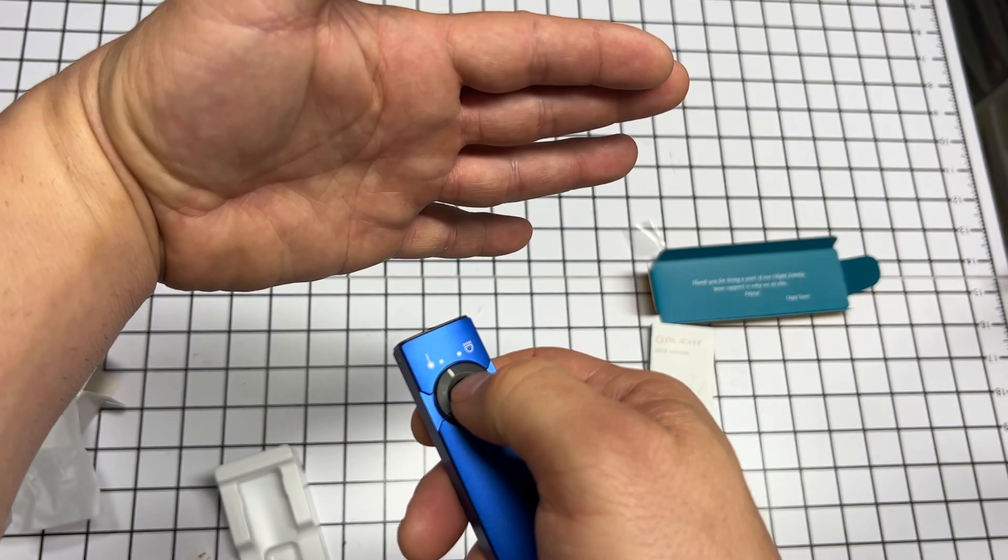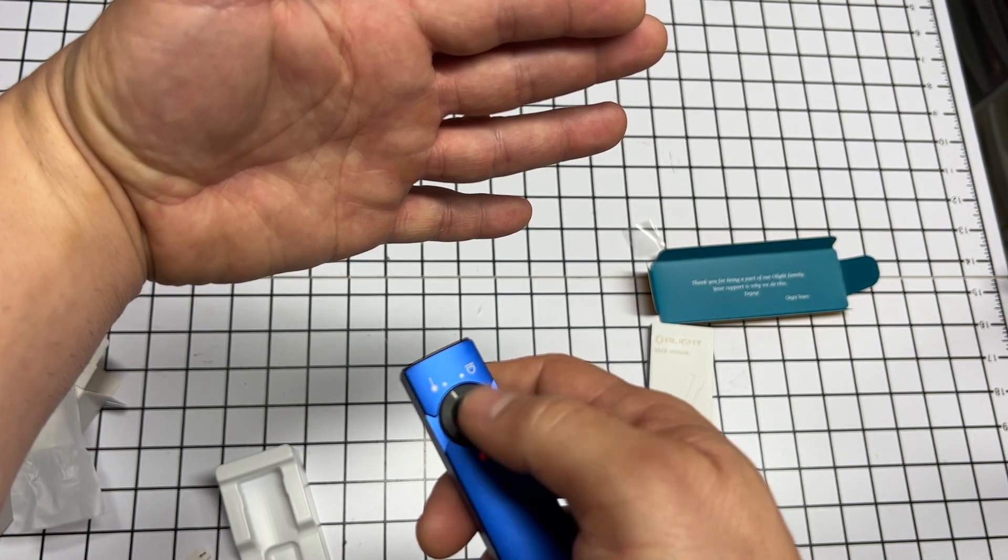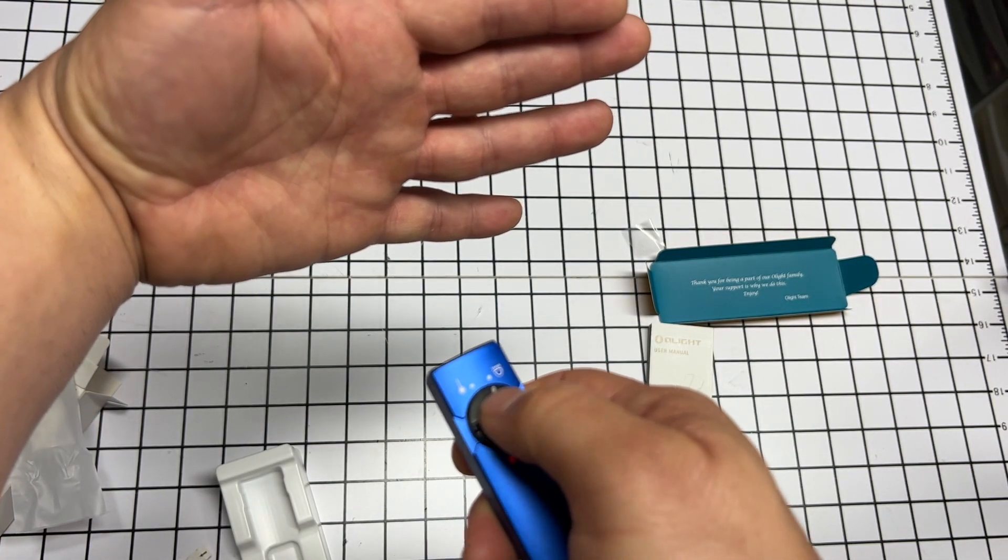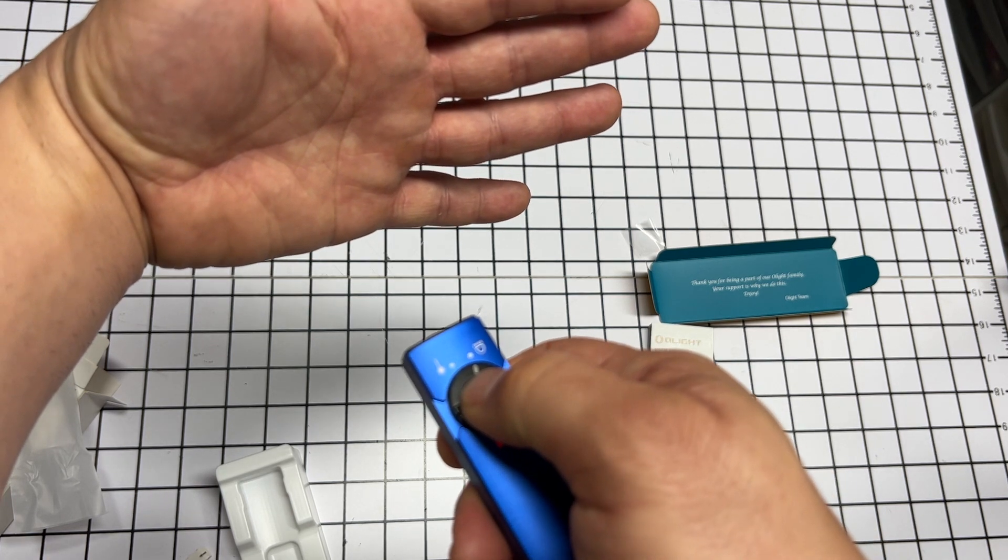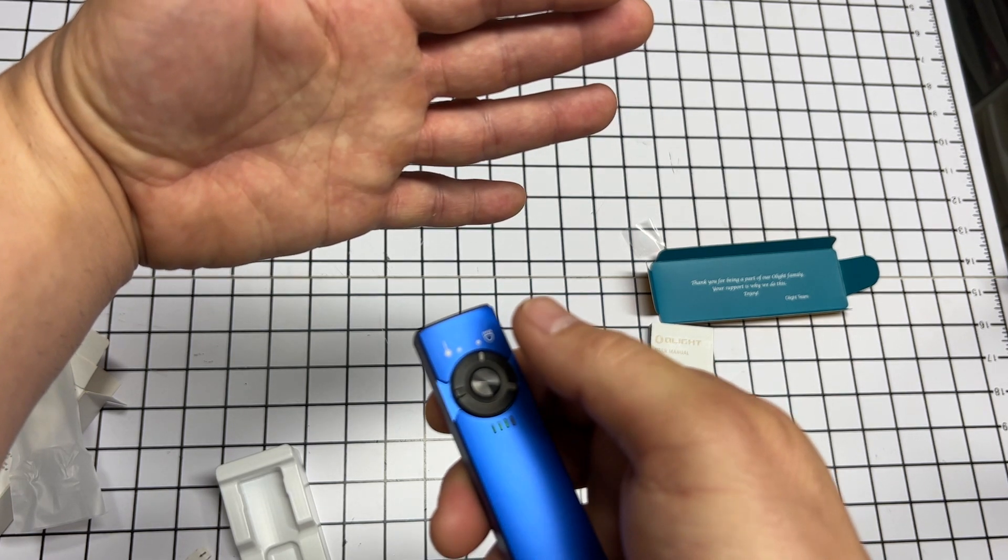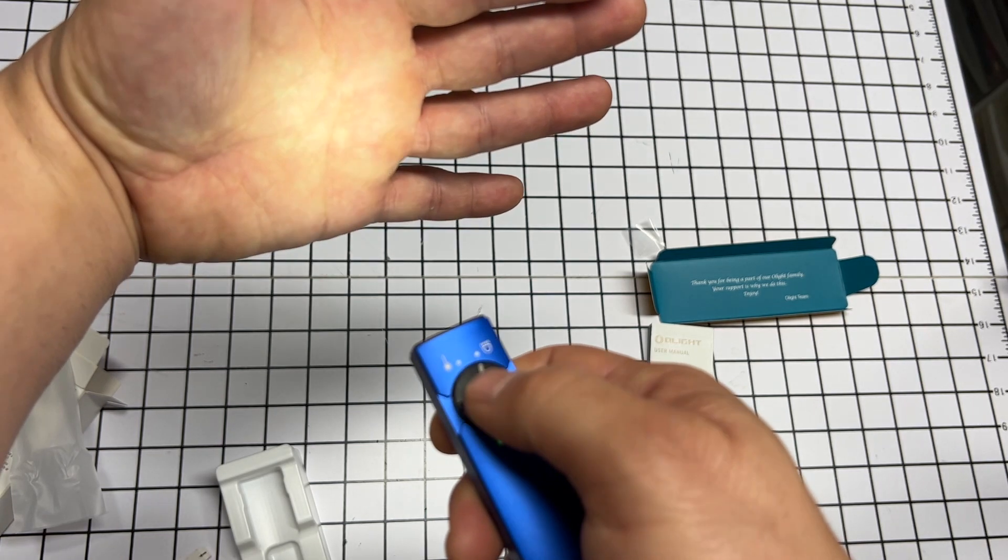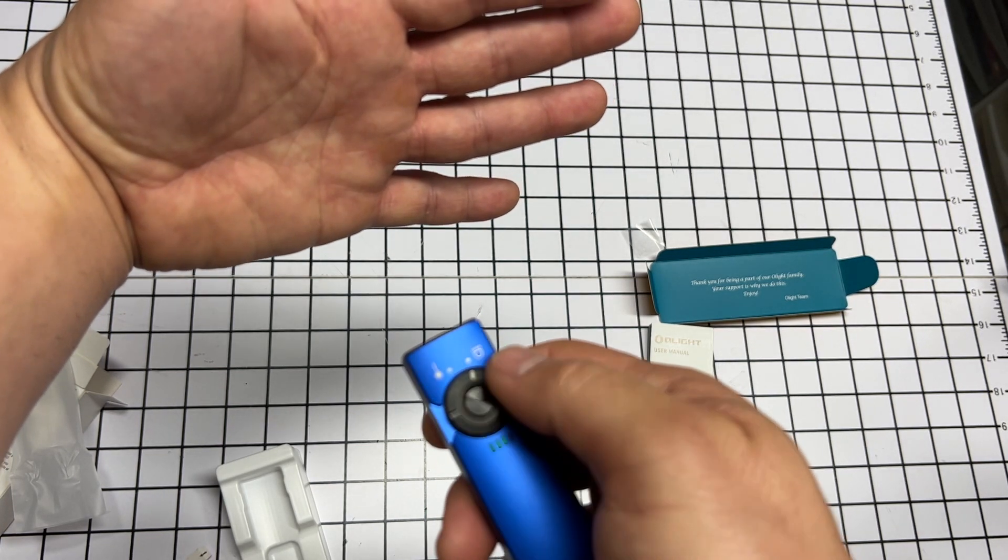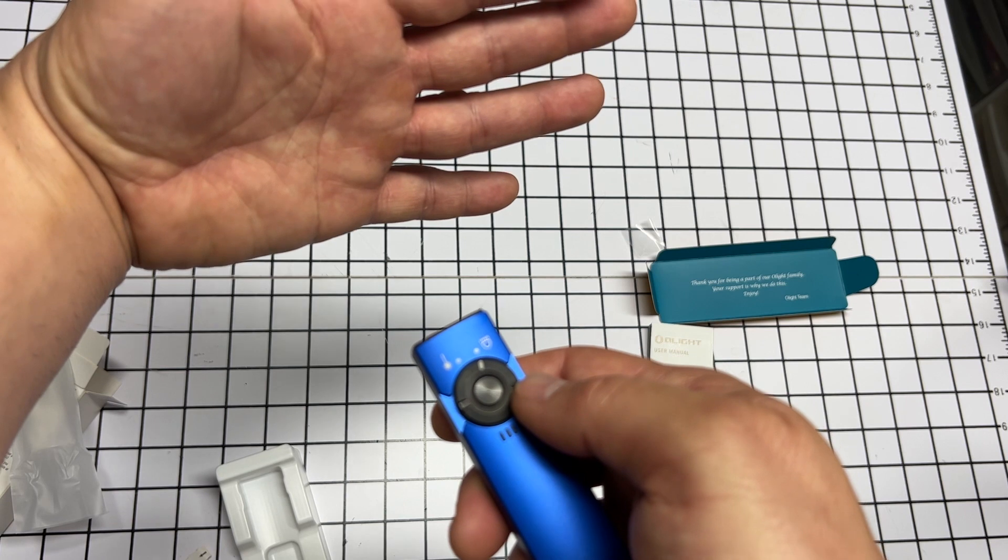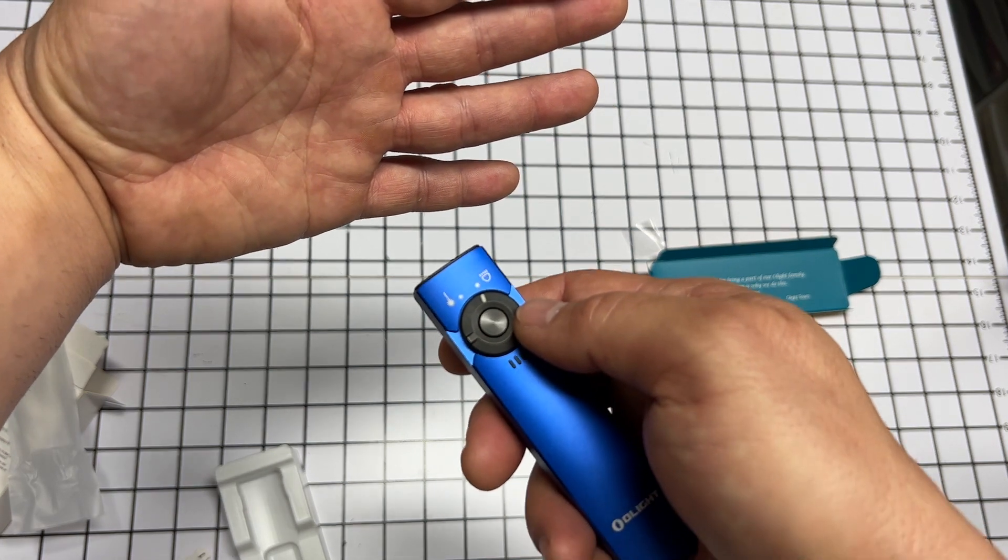So if I hit the power button, notice it doesn't turn on the light. If I switch to the light, it doesn't turn on the light. If I long press it again, that unlocks it. Long press again, turn the light, switch the light. So again, you can lock it as well as unlock it. That's pretty cool.